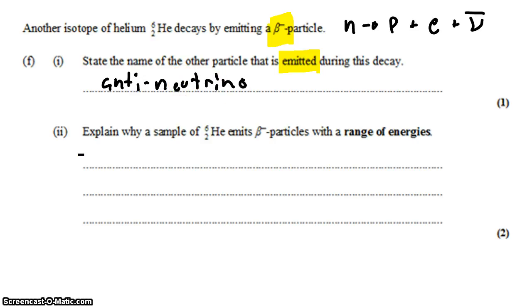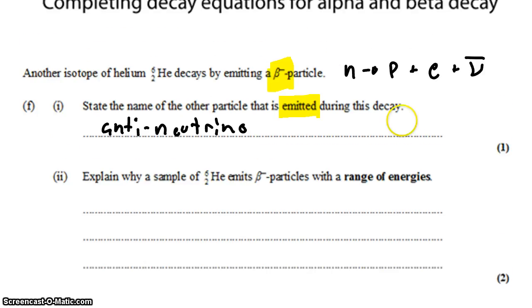We have to remember that in beta decay, you get your beta particle and also a neutrino or anti-neutrino. The way I remember which comes with which is that whether you're talking about beta plus or beta minus decay, you always get one and only one antiparticle in the reaction. In beta minus decay, we have a neutron — that's a regular particle — proton, electron, all regular matter, and an anti-neutrino, which is anti-matter.